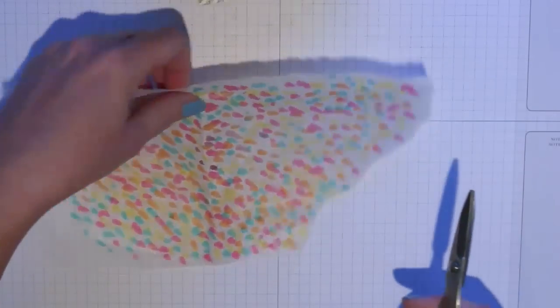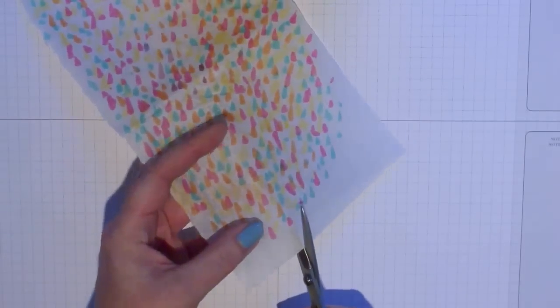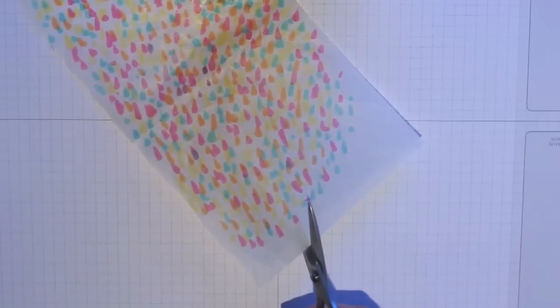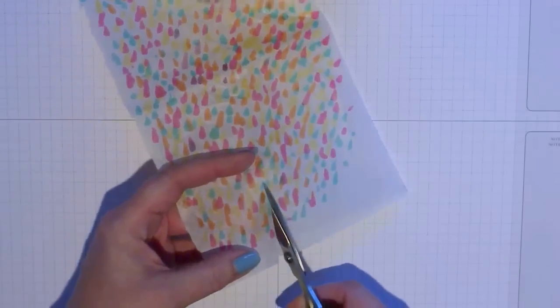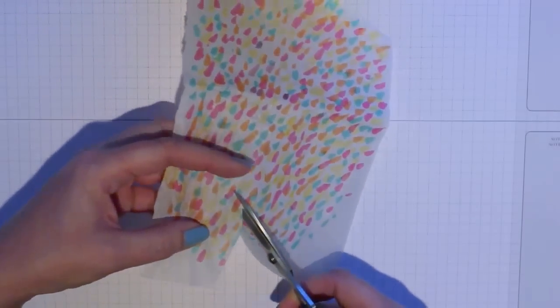So here's what it looks like when it's finished and just note that it will be more intense on one side of the tissue paper than on the other, so pay attention to that when you go to put it down.